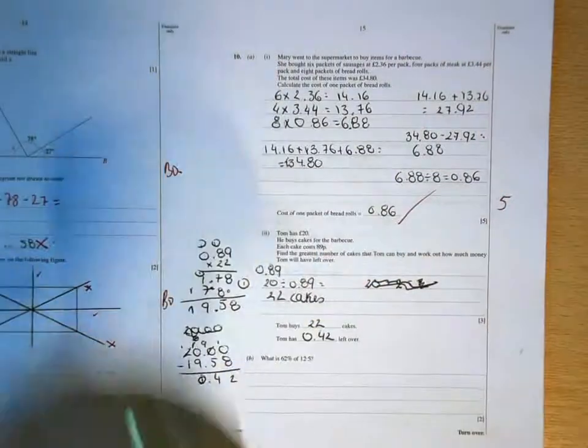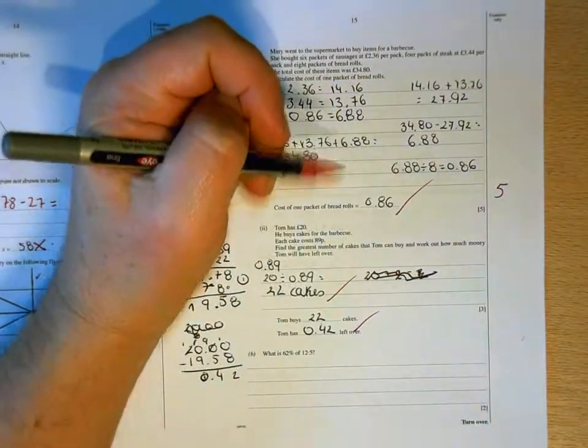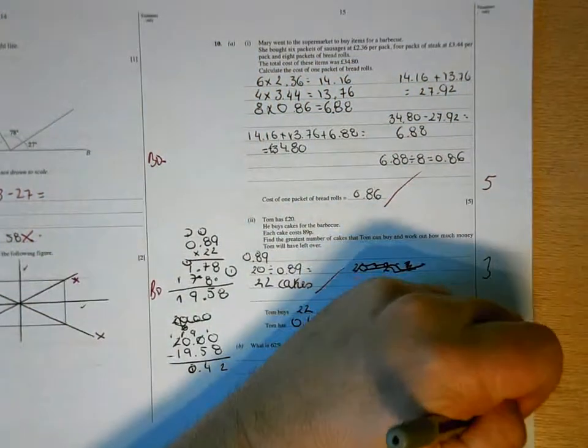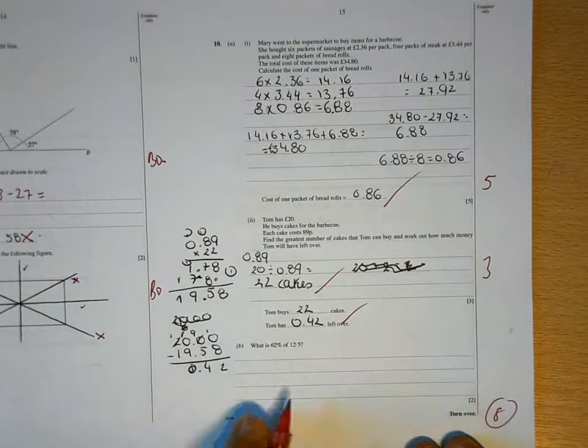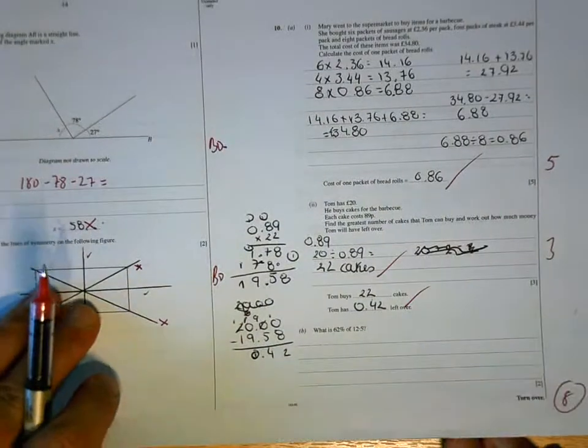And 86 pence is fine there. 22 cakes and 42 pence left over is very good there. So that's eight marks there. You should be able to do this. So take a look at the video clip and see if the way that I do that rings any bells.